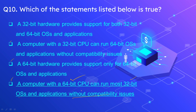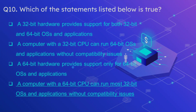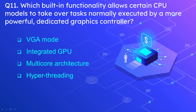Question number 11: which built-in functionality allows certain CPU models to take over tasks normally executed by a more powerful and dedicated graphics controller? The options are VGA mode, integrated GPU, multi-core architecture, and hyper-threading. The correct answer is the integrated GPU.